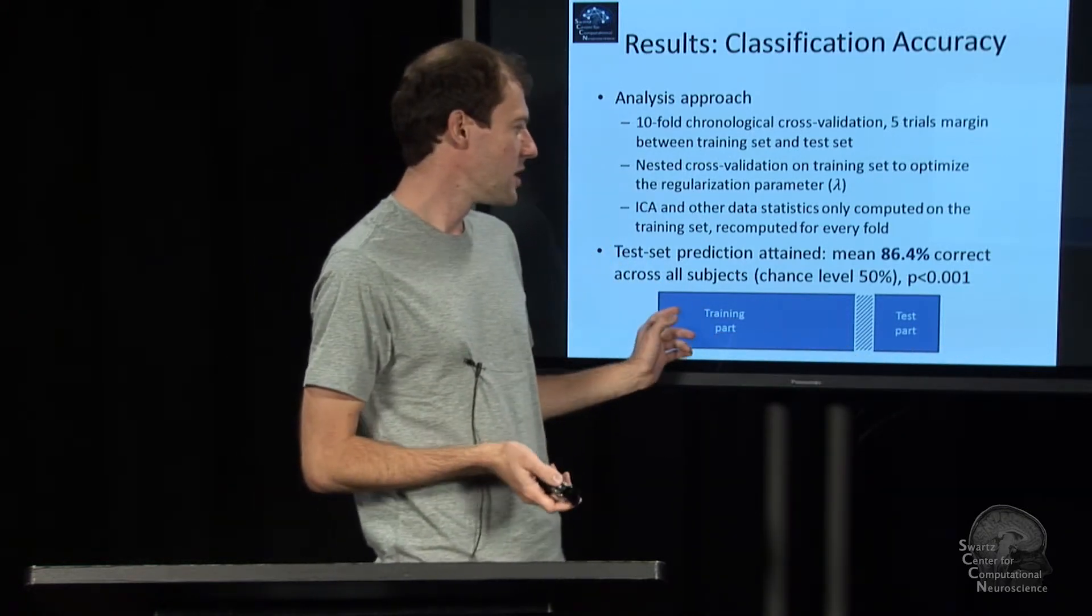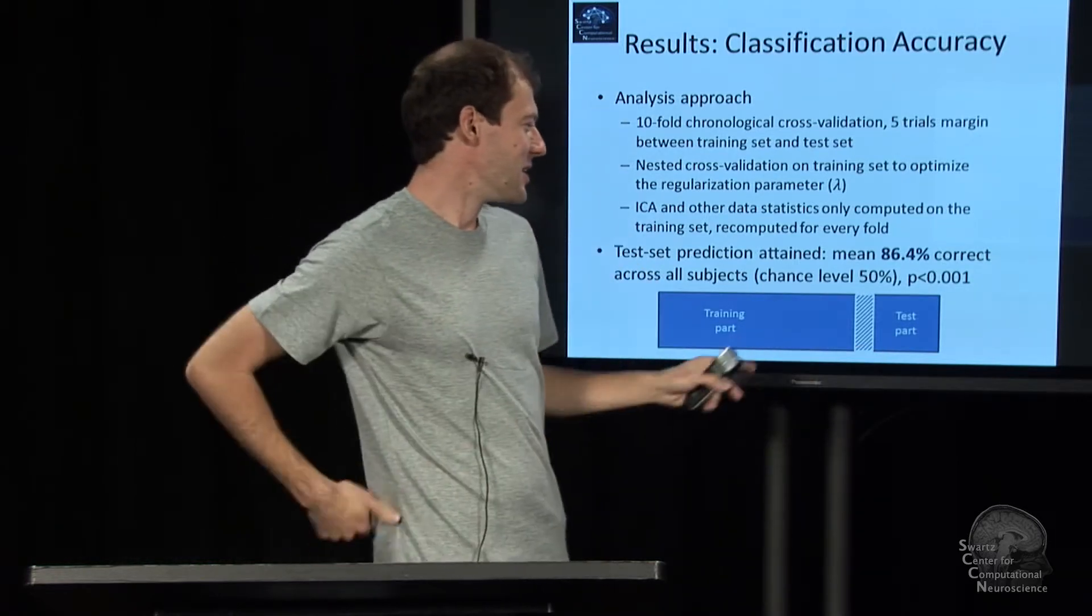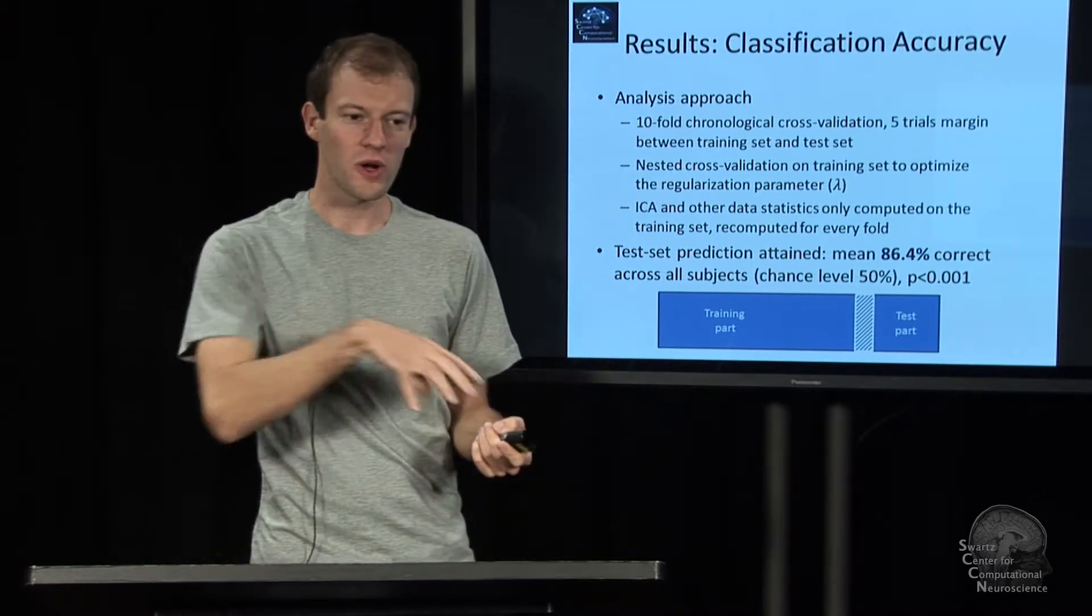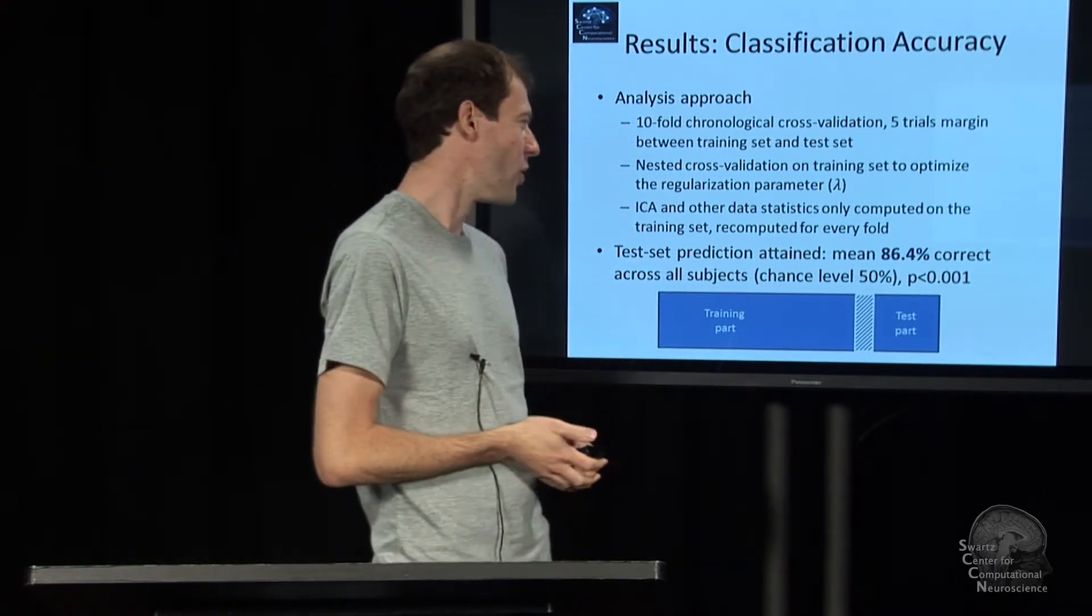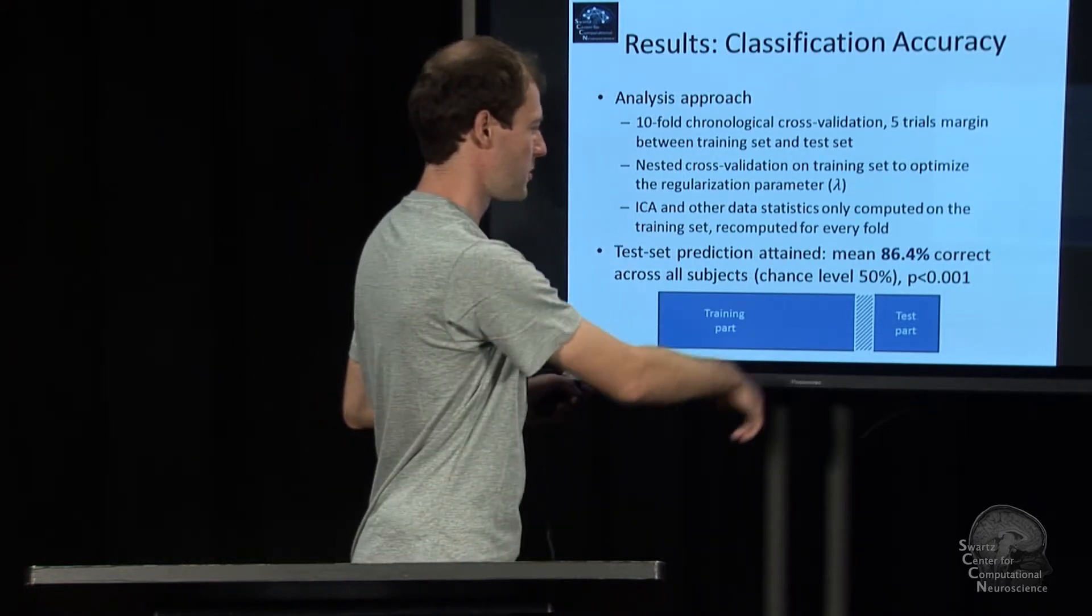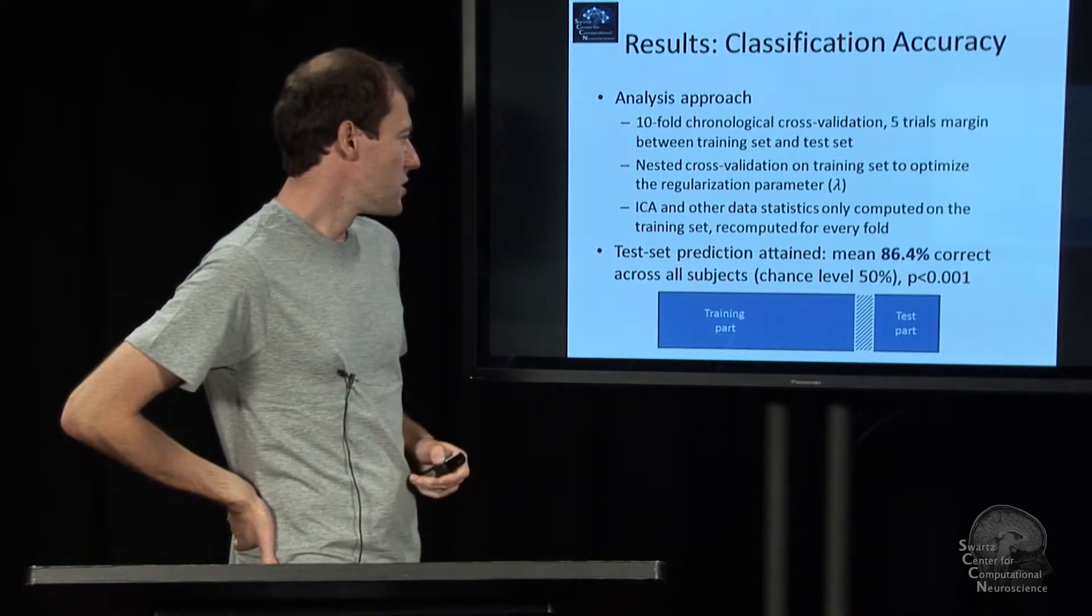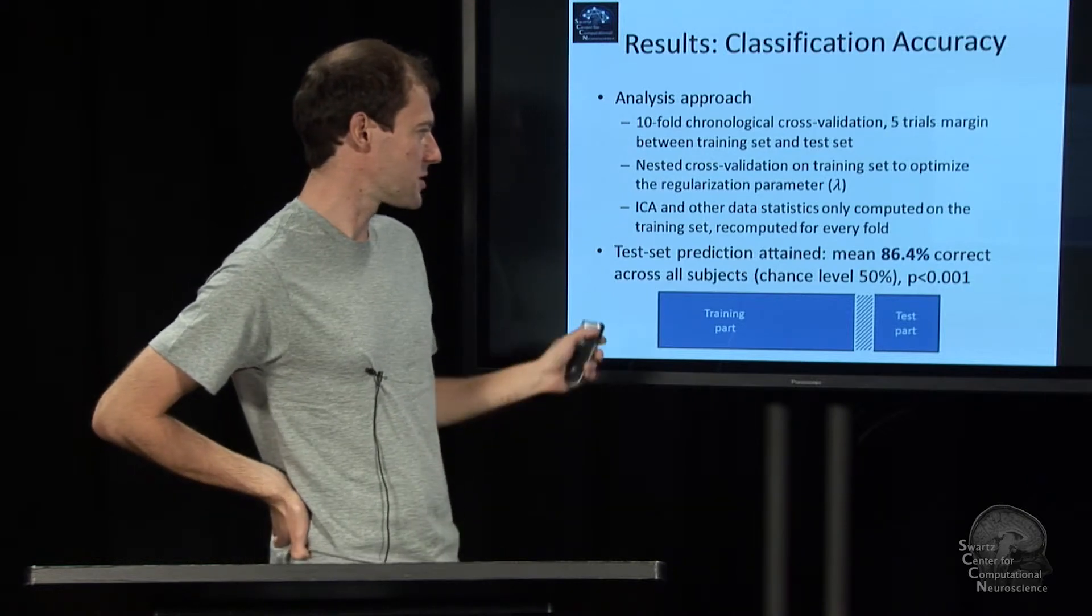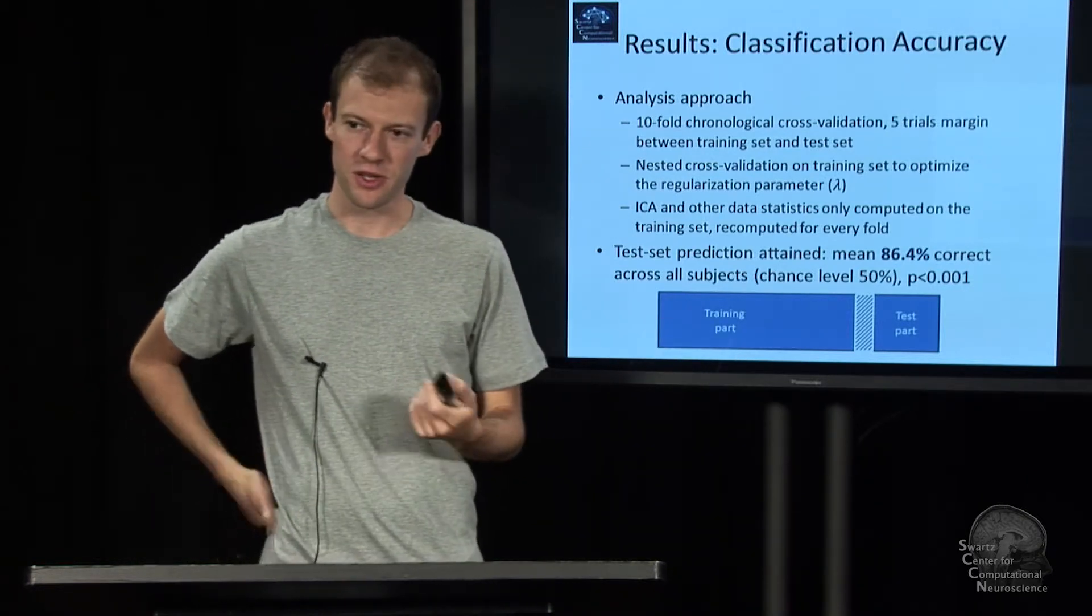That's important because if you do the ICA on the whole data, you are sort of, in a sense, statistically double dipping. You're quantifying how well a classifier works that has already seen the test data. And that's a very well-known no-go. And it's very easy to make this mistake. So, but fundamentally BCIDAP, for example, only ever applies these kinds of things to the training set. And what we got is a mean accuracy of 86.4% correct across subjects, so at a chance of 50%. So that's actually highly significant. It's pretty neat.